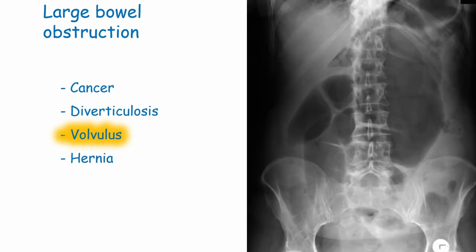A cecal volvulus is less common than the sigmoid volvulus, as the cecum is usually retroperitoneal and therefore more difficult to twist around the mesentery. However, in a small proportion of the population the cecum is surrounded by peritoneum, and is therefore susceptible to twisting.